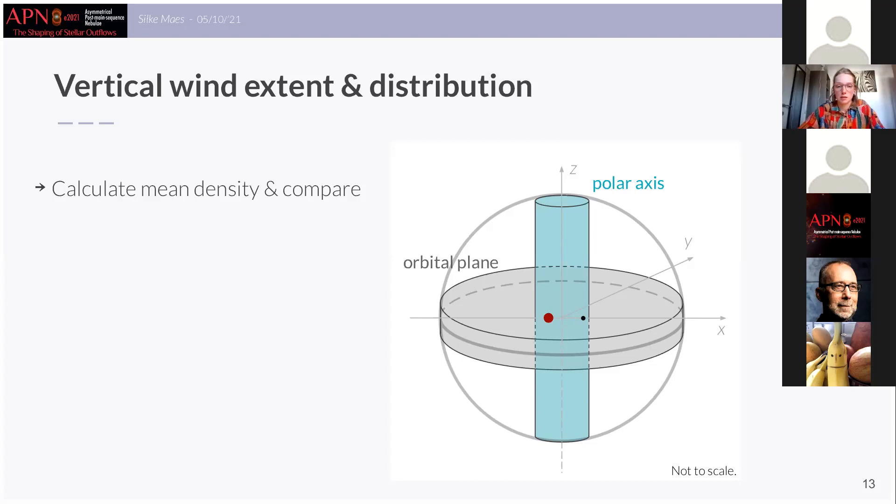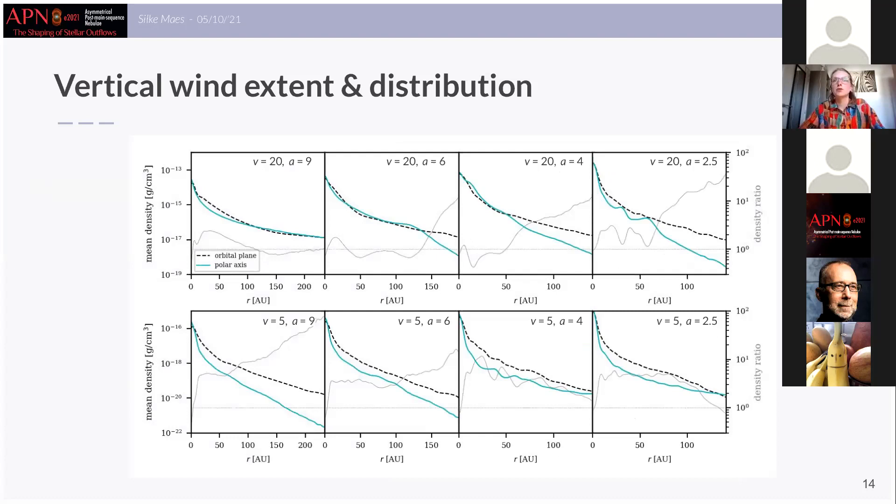So on this slide I show you eight of our models, the models which have a stellar companion. In the dashed line I give the mean density in the orbital plane and the blue line gives the mean density along the polar axis. And the gray curve gives the ratio between those two densities and this gray curve indicates that the matter is not distributed in the same way in the orbital plane as along the polar axis.